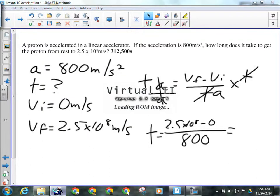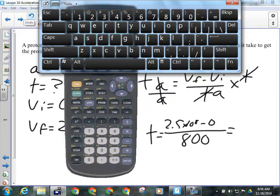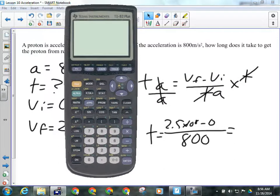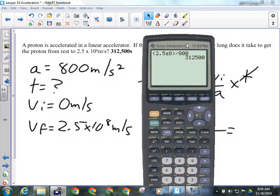So T equals 2.5 times 10 to the 8 minus 0 over 800. Now, when you're punching that into your calculator. So we'll have here in brackets 2.5, just like we did with Avogadro's number. You've got to put anything that's got an exponent on it in brackets. 2.5 times 10 to the 8 minus 0 is still the same number, so I don't bother with that. Divided by 800, and that should give us 312,500 seconds. So probably the tricky part was what to do with that big number.